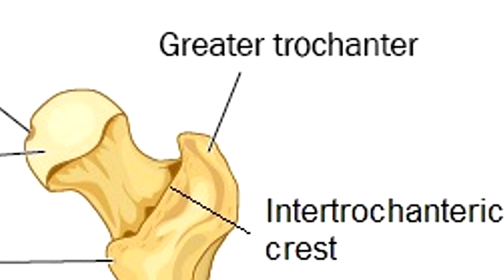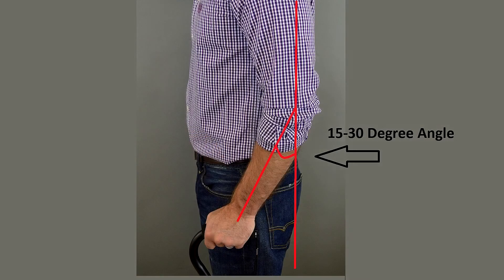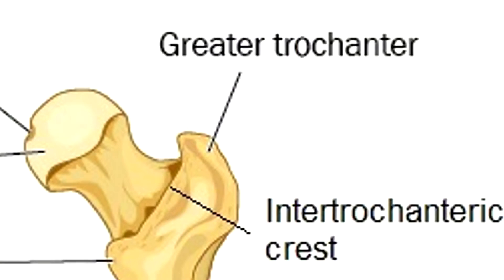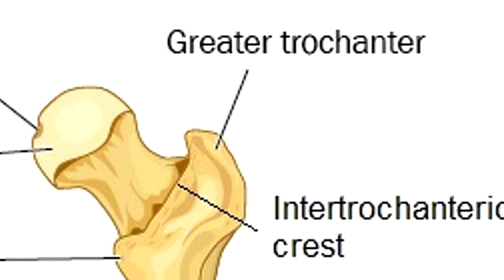The greater trochanter can be felt on the lateral side of the thigh near the hip, and it serves as a landmark when fitting a patient for a cane. It also is a site you'll want to monitor for bed sores or pressure ulcers when a patient is lying on their side for an extended period.